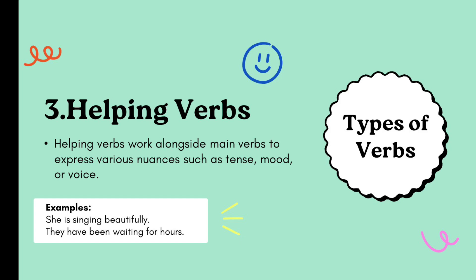The third type of verb is helping verbs, also called auxiliary verbs. Helping verbs work together with the main verb to express tense, mood, or voice. For example: 'She is singing beautifully.' 'They have been waiting for hours.'